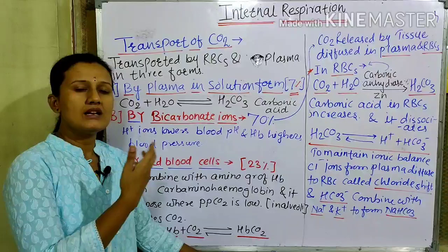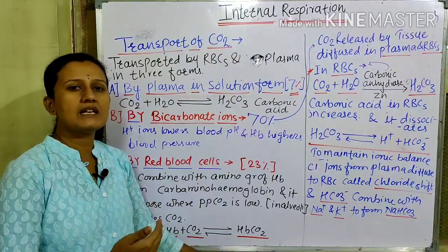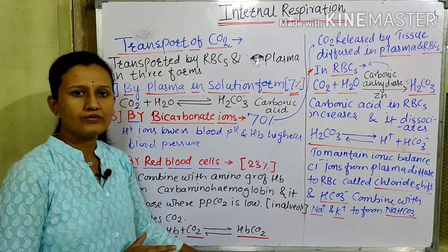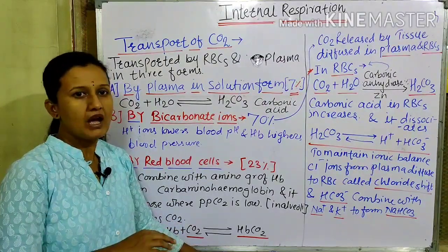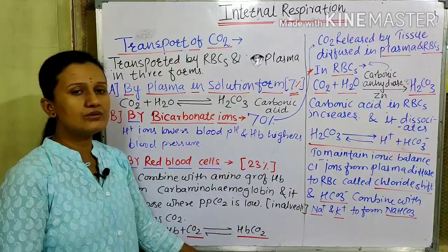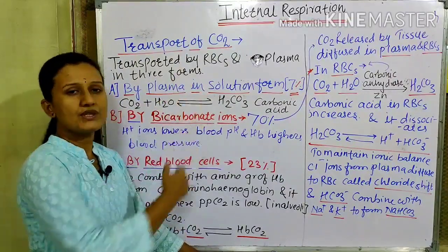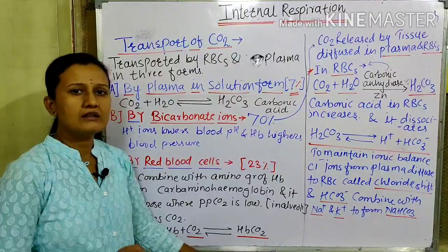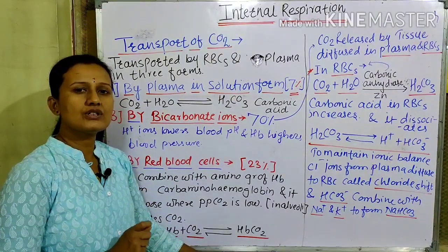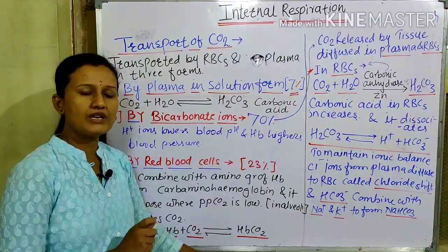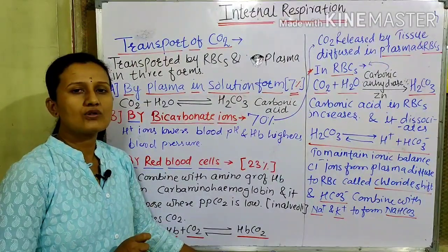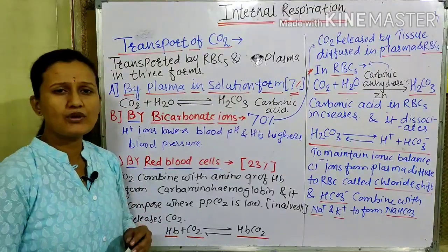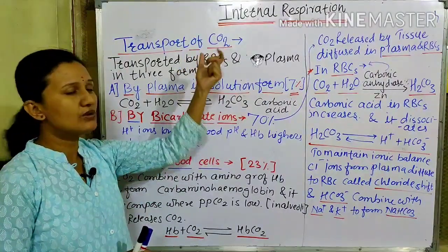We saw how O2 comes from the lungs into the capillaries and how it reaches the tissues. We have already seen the oxygen dissociation curve showing the partial pressure of O2 and HB concentration. Today in this video we are going to learn how the transport of CO2 is done — that is the second phase of internal respiration.